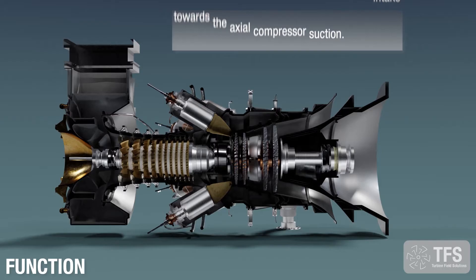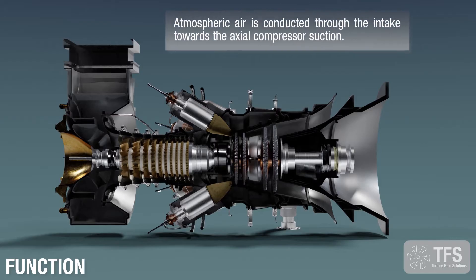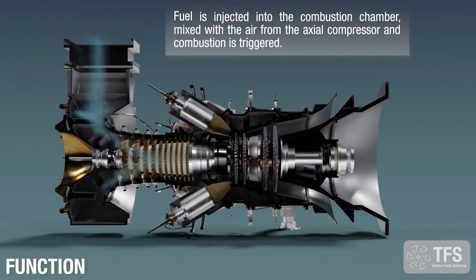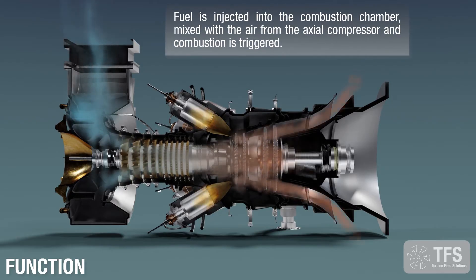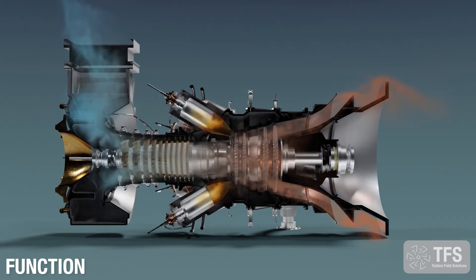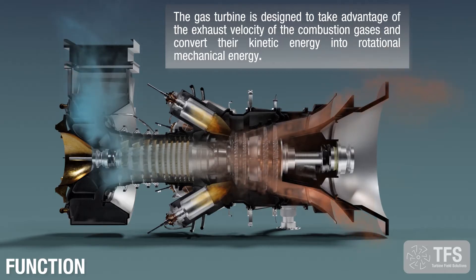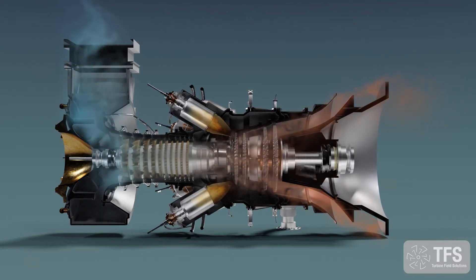Functioning. Atmospheric air is conducted through the intake towards the axial compressor suction. Fuel is injected into the combustion chamber, mixed with the air from the axial compressor, and combustion is triggered. The gas turbine is designed to take advantage of the exhaust velocity of the combustion gases and convert their kinetic energy into rotational mechanical energy.